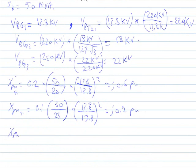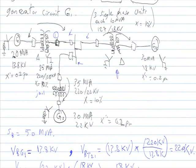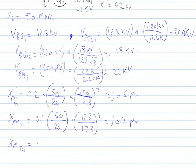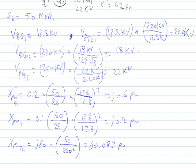The per-unit value of transmission line number one, where the ohmic value is given as j80 ohms: j80 multiplied by the base MVA of 50, over the base voltage of 220 kV squared. This yields j0.083 per unit.